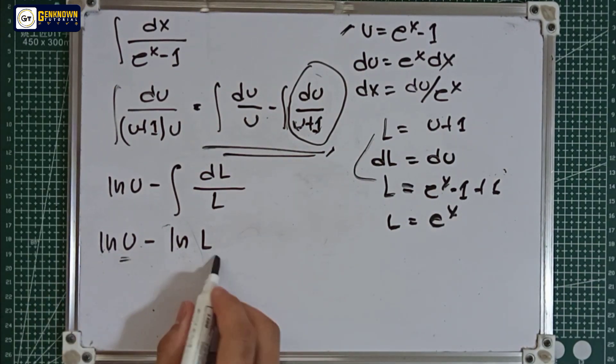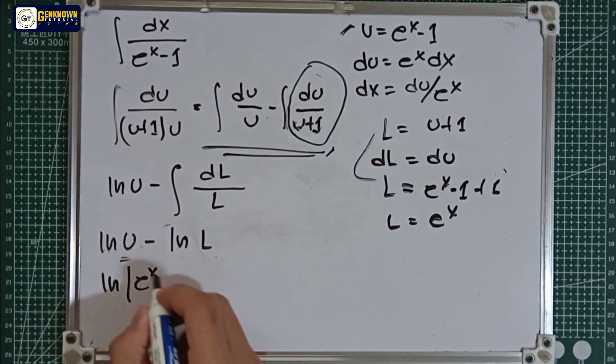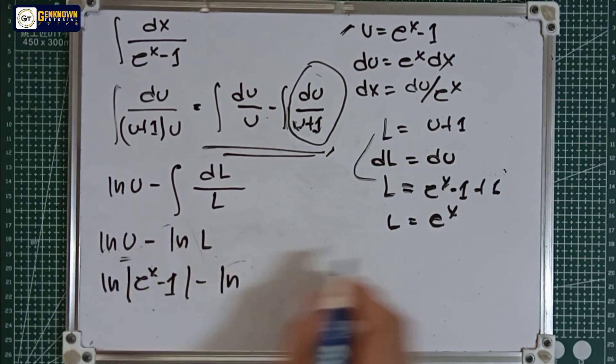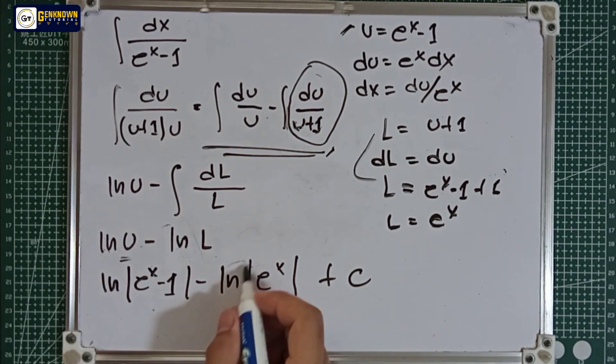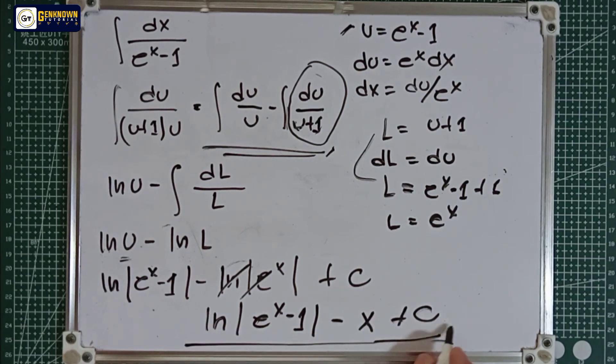Let's substitute now the values of L and u. So ln u is equal to e raised to x minus 1 minus ln L is e raised to x plus the constant. Or we can simplify further, the final answer now is ln of e raised to x minus 1 minus x plus the constant. This is the final answer for number 11.